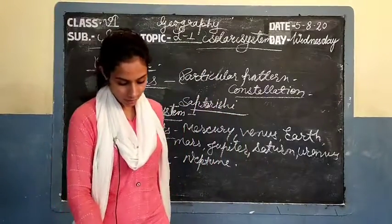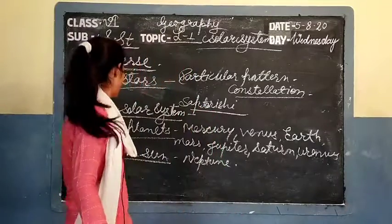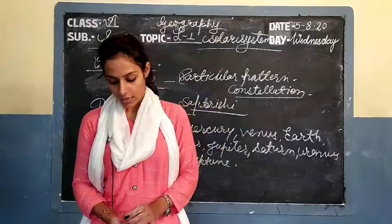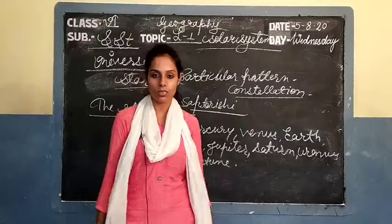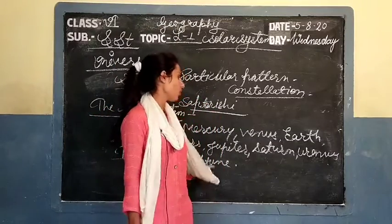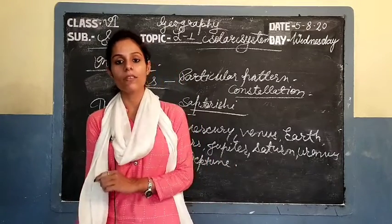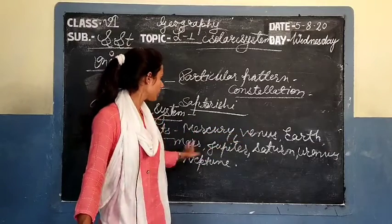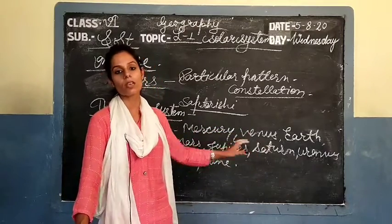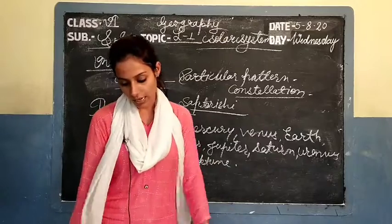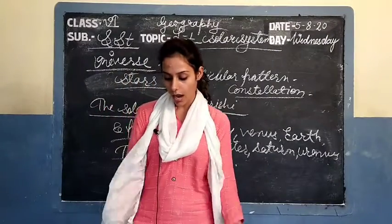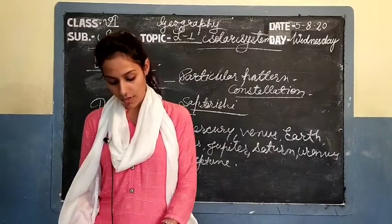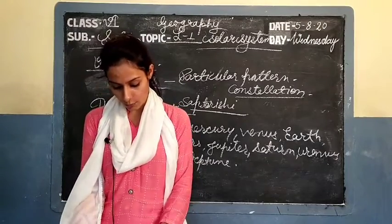Now I will teach you about planets. There are 8 planets in our solar system: Mercury, Venus, Earth, Mars, Jupiter, Saturn, Uranus, and Neptune. According to their distance from the sun they are ordered: Mercury, Venus, Earth, Mars, Jupiter, Saturn, Uranus, and Neptune.